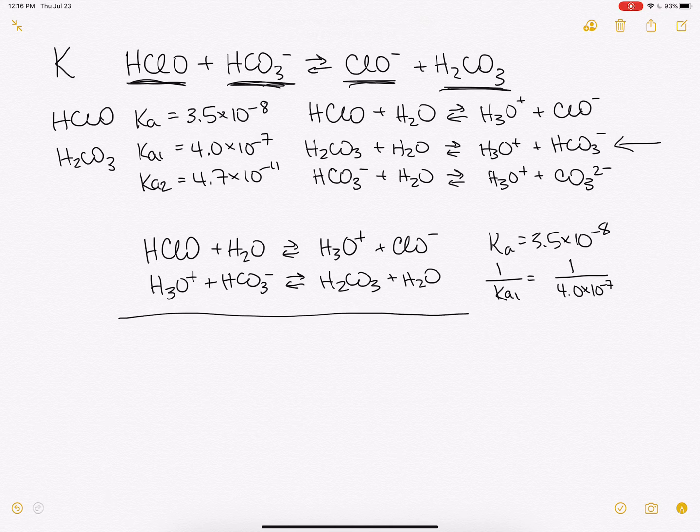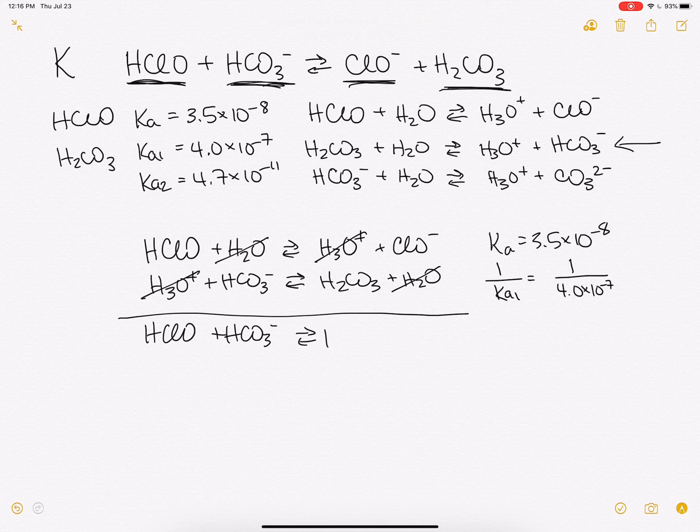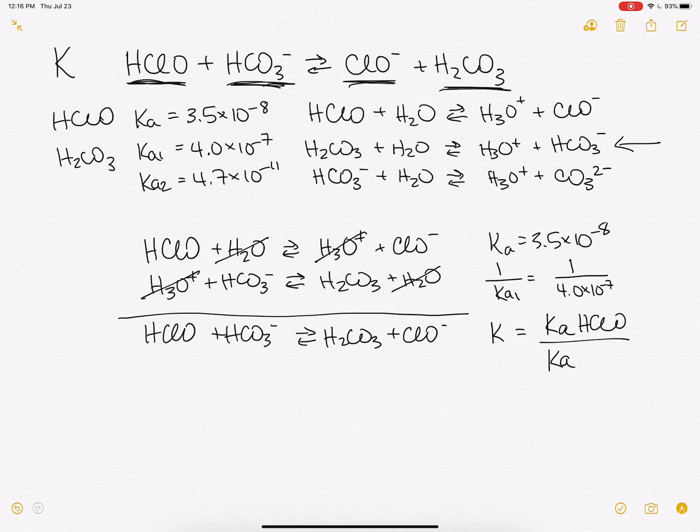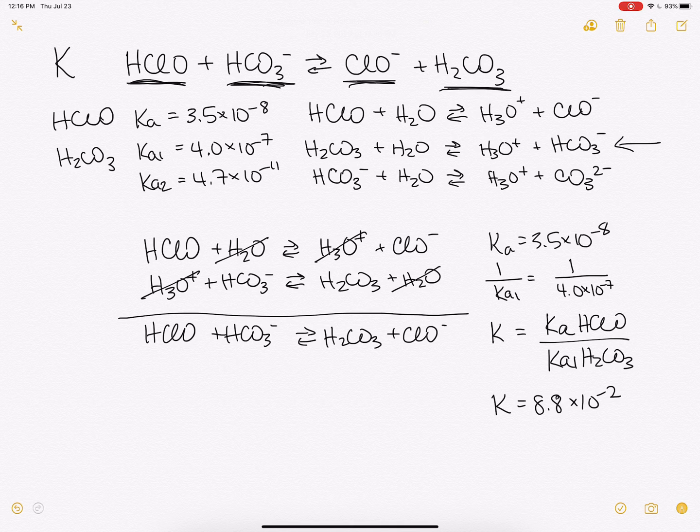And if we add these guys together, our H3O+ and our H2O are going to cancel out, and we'll get the overall reaction that we're looking for. And so our K for the overall reaction is just the Ka of HClO divided by the Ka1 of H2CO3. And if we calculate that answer, we end up with 8.8 times 10 to the minus 2 for our K for this overall reaction.